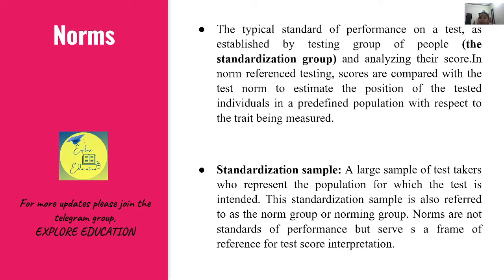एक खास बात: norms are not standards of performance। हम यह नहीं कह रहे कि आपको वहाँ तक perform करना है — यह standard नहीं है, बल्कि यह frame of reference है। NPC हमें बताता है कि maximum लोग average perform करते हैं; जो tails की तरफ हैं वो बहुत कम होते हैं। Norm सिर्फ बताता है कि आप average से below या above perform करें — यह नहीं बताता कि आपको यहाँ तक ही perform करना है। It serves as a frame of reference.